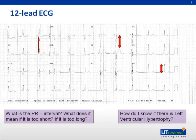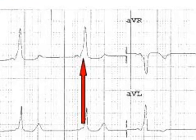The PR interval physiologically occurs because of the electrical impulse traveling through the AV node. If it is too short or absent, an accessory pathway is present, which would result in premature depolarization of the ventricle. Look at this 12-lead ECG — the PR interval is very short and a delta wave is present. Therefore, this is Wolff-Parkinson-White syndrome.